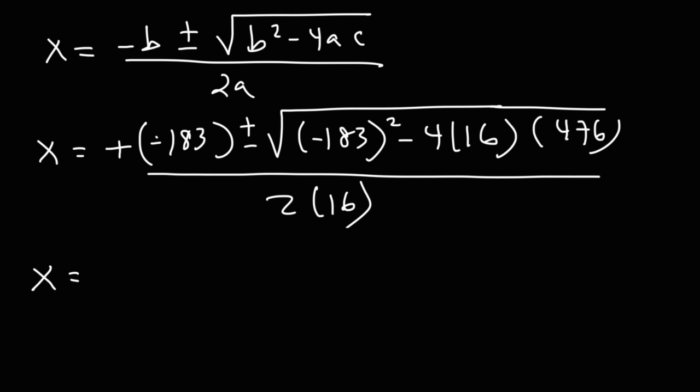So these two negative signs will cancel, giving us positive 183. 183 squared is going to be 33,489.